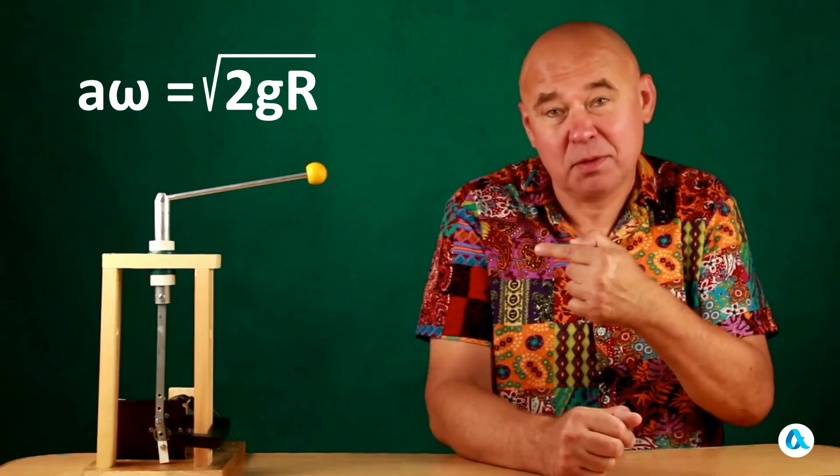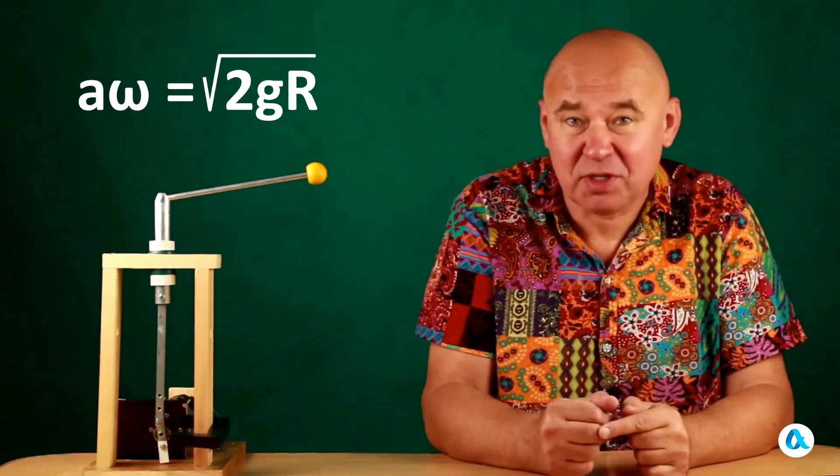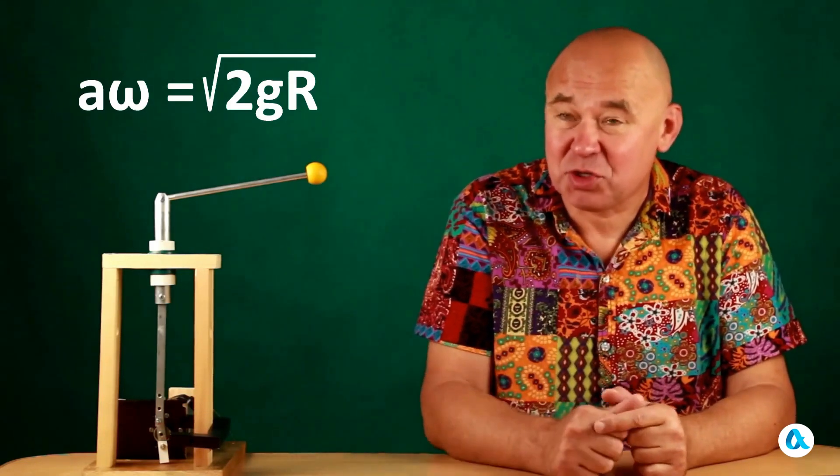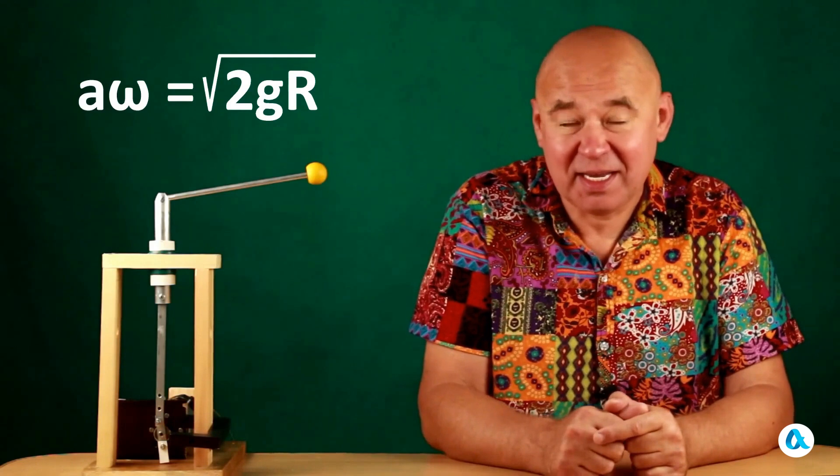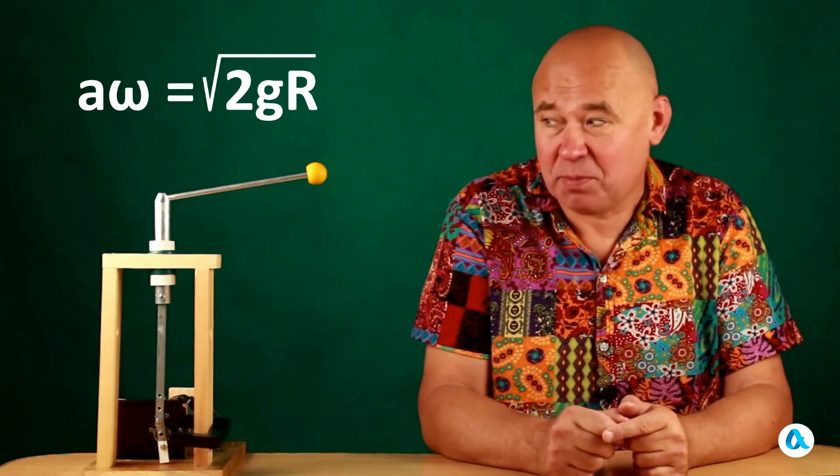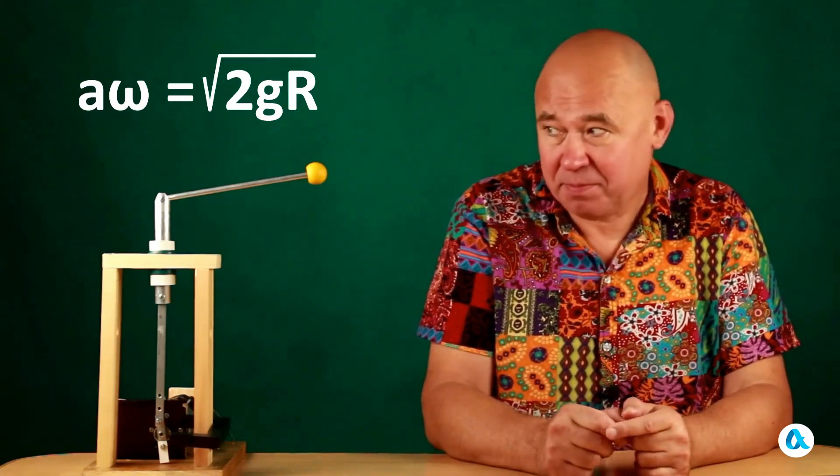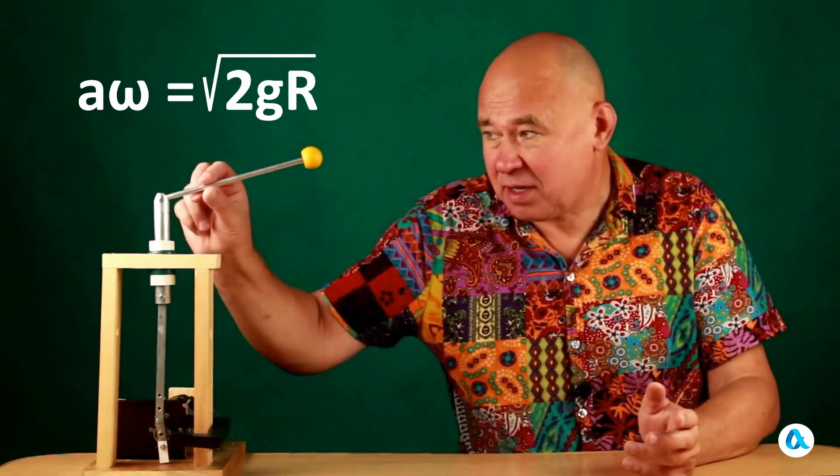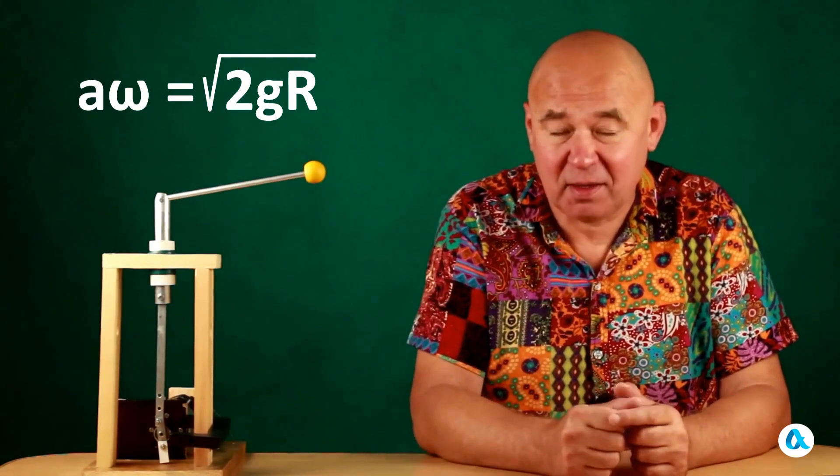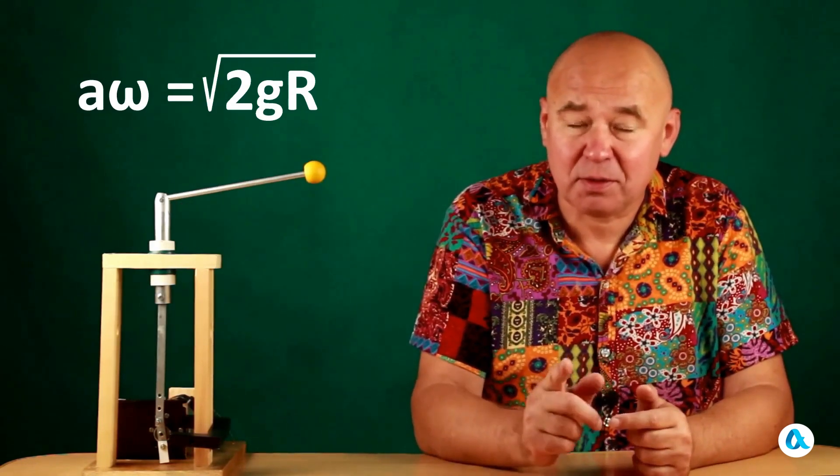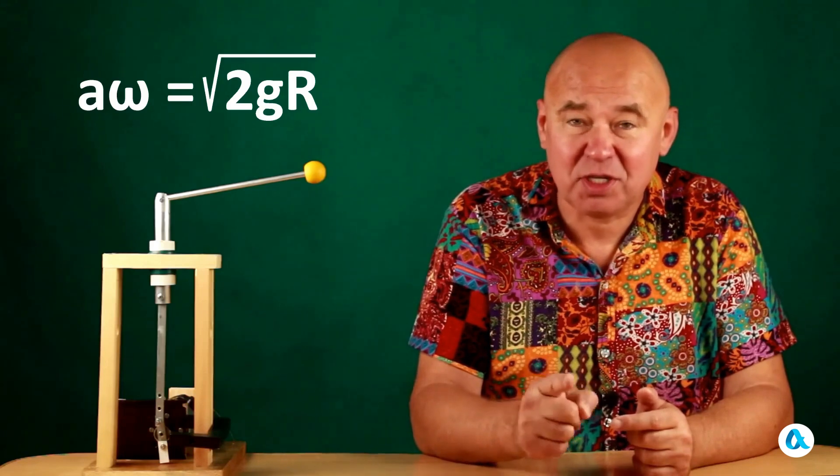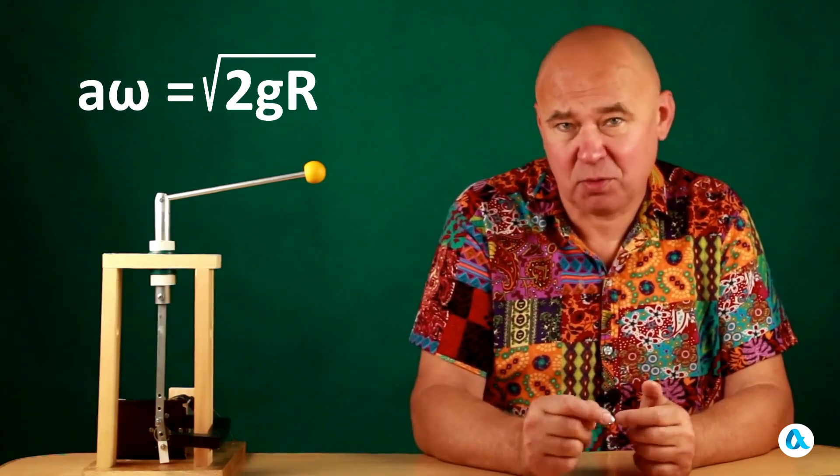And now we could move from this formula to the experiment. But first, it should be noted that r, which is here, is the length of the mathematical pendulum. And our pendulum is made of a metal tube with a ball at the end. So its effective length should be substituted into this formula, which I will find now.